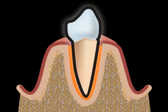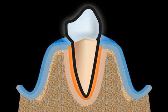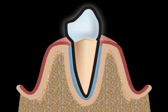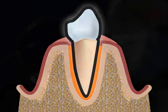The periodontal apparatus consists of the gums, the bone, the periodontal membrane, and the root cement.